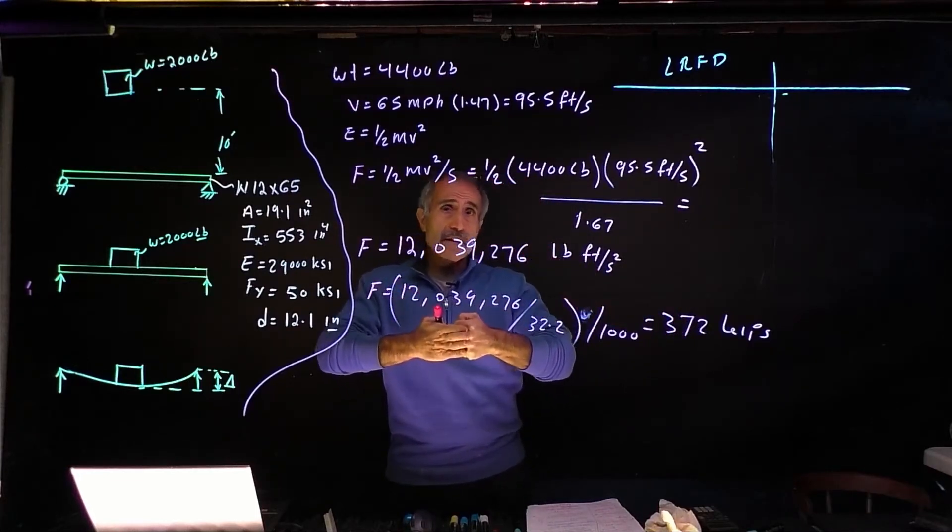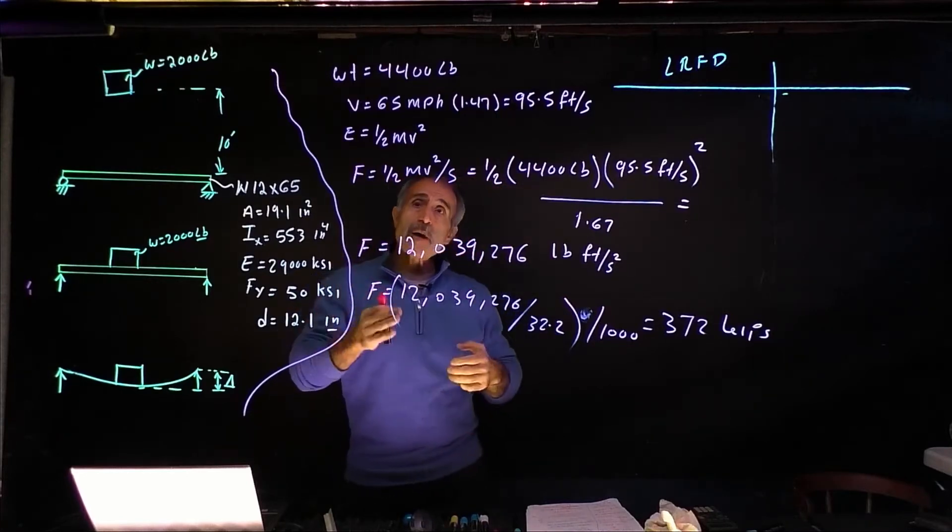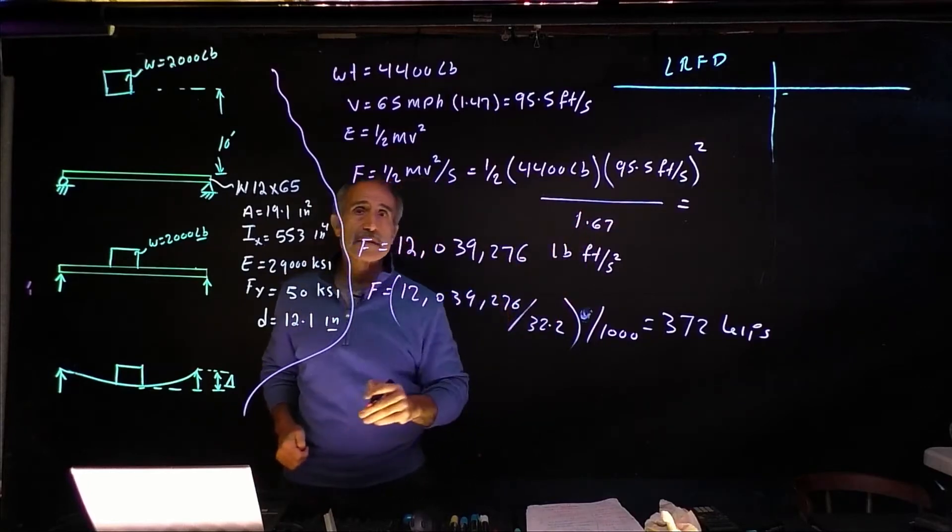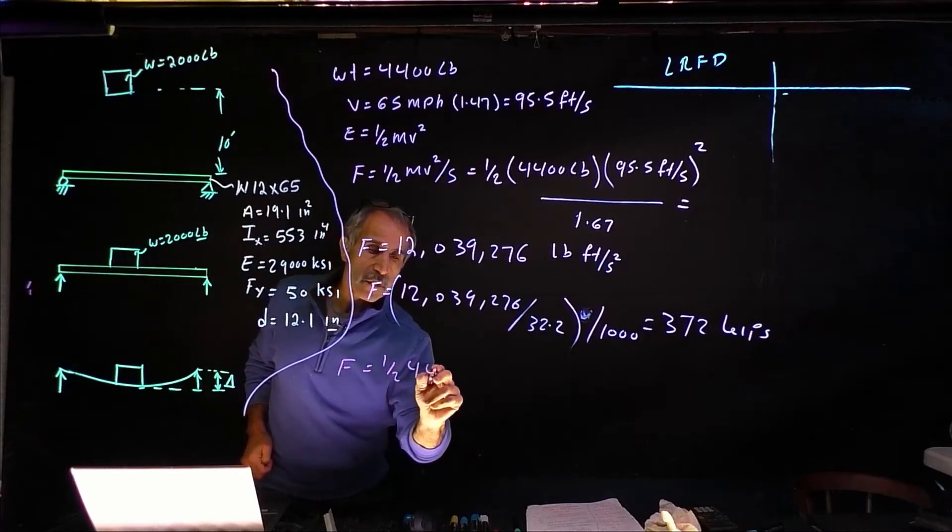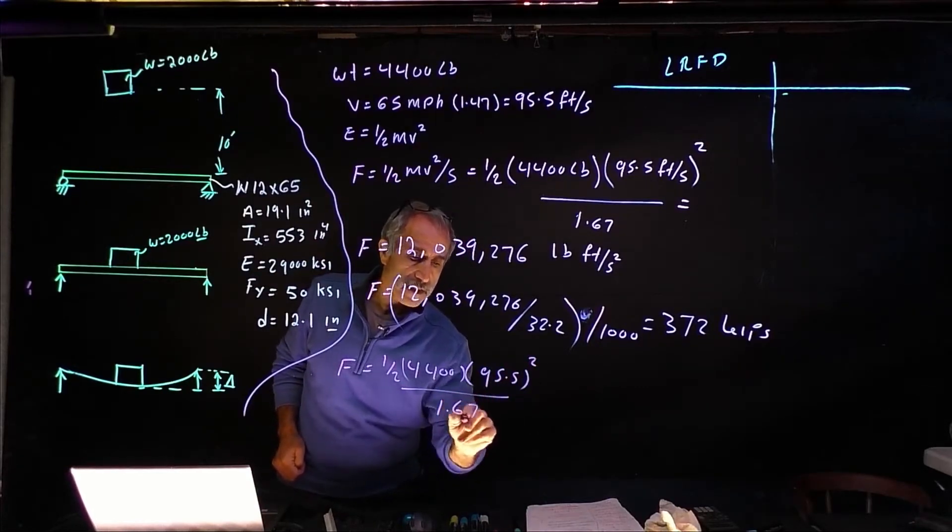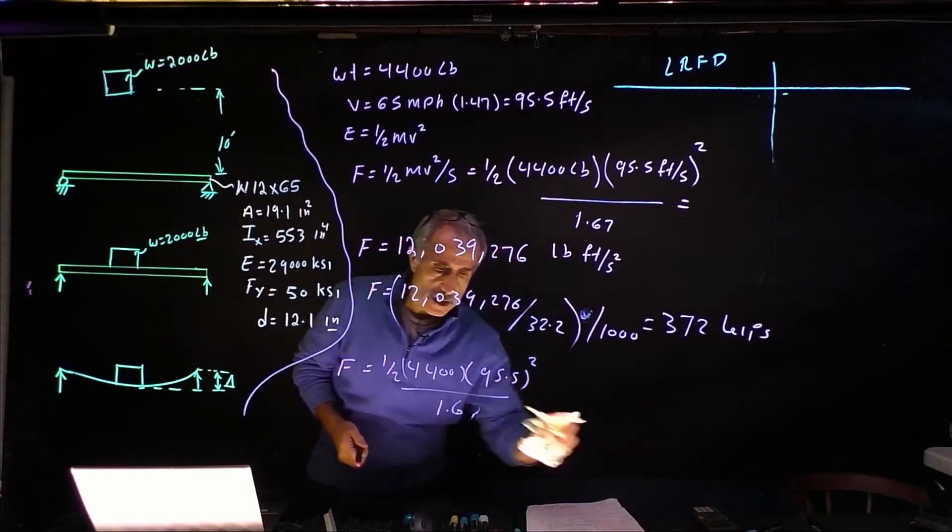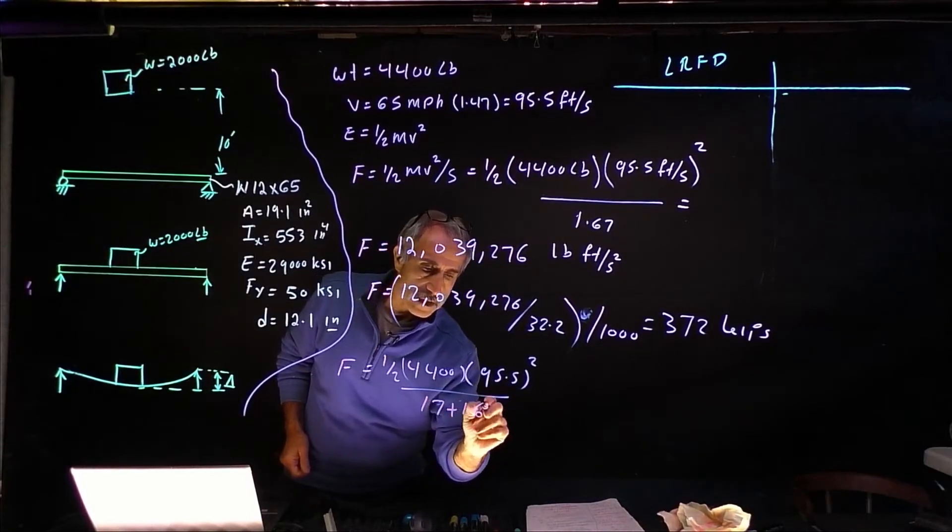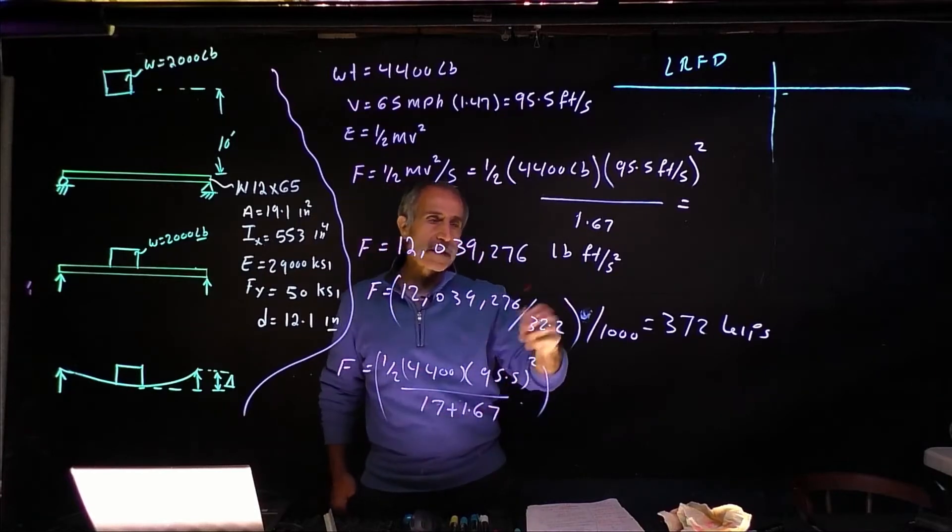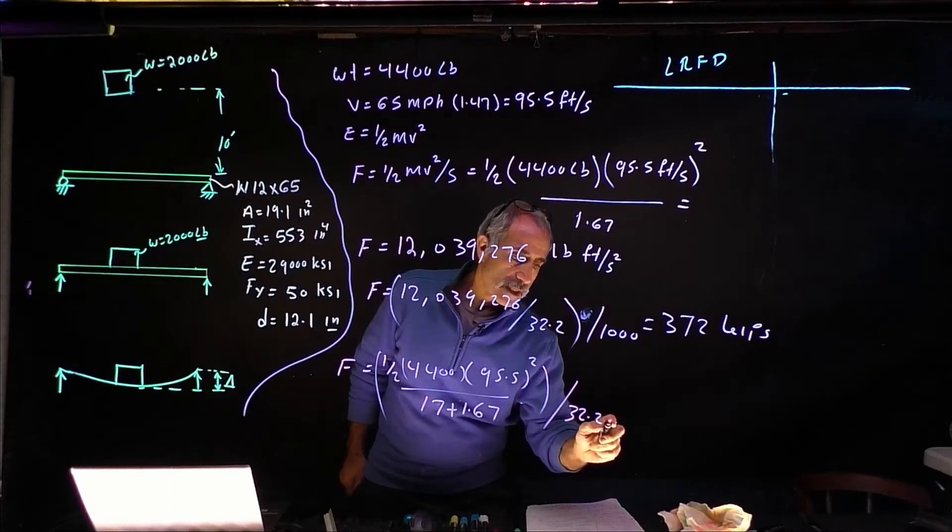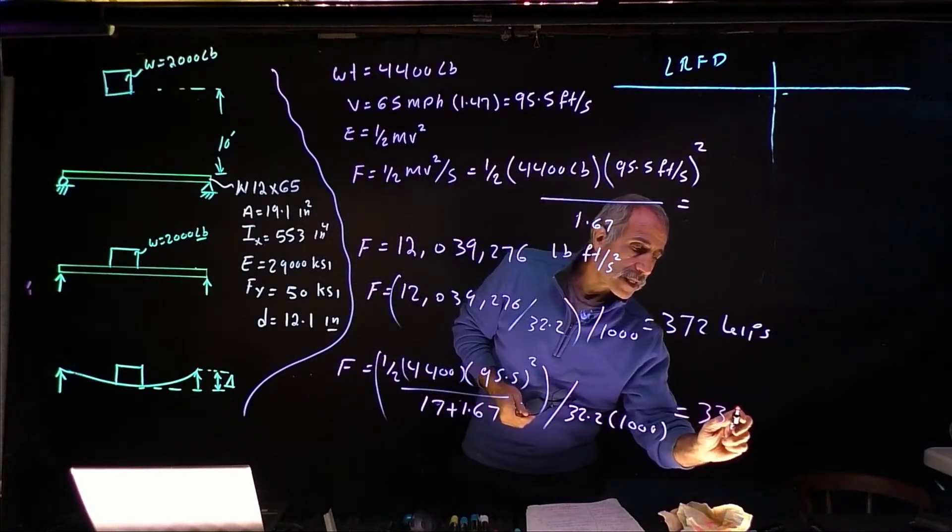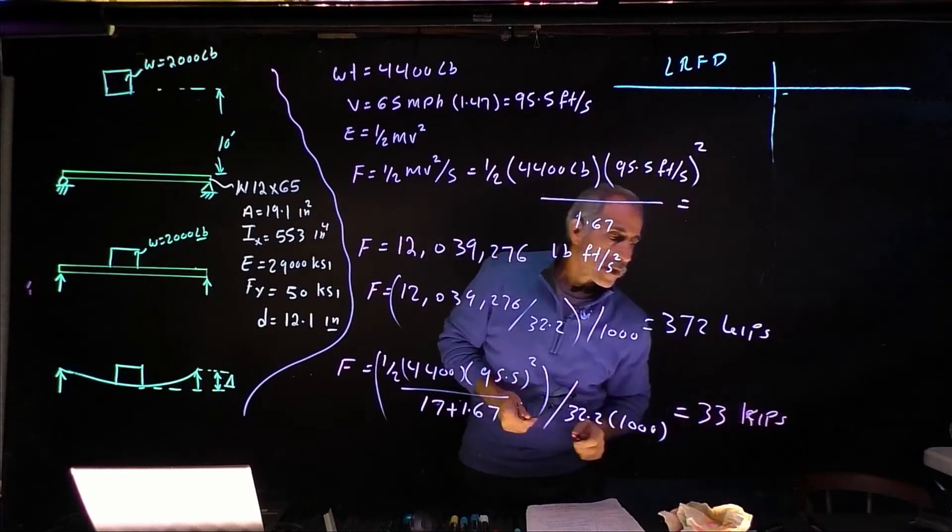When a vehicle hit the impact attenuator and the front of the vehicle went in about 1.67, the total force that created was 372 kips, assuming the object it hit did not deform. But as you can see, the object did deform and I measured it, it was 17 feet. So now let's do the same thing, just divide it by 17 feet plus this. So now it's going to come out to one half 4400 times 95.5 squared divided by 1.67 plus 17. Then take this number, divide by 32.2, make it a kip. That comes out to 33,000 pounds or 33 kips.